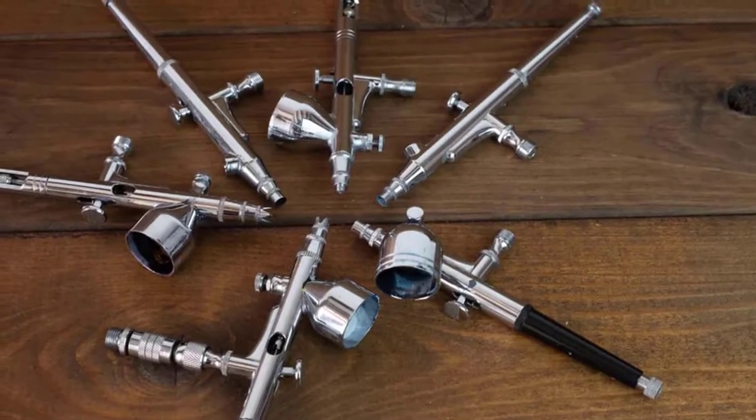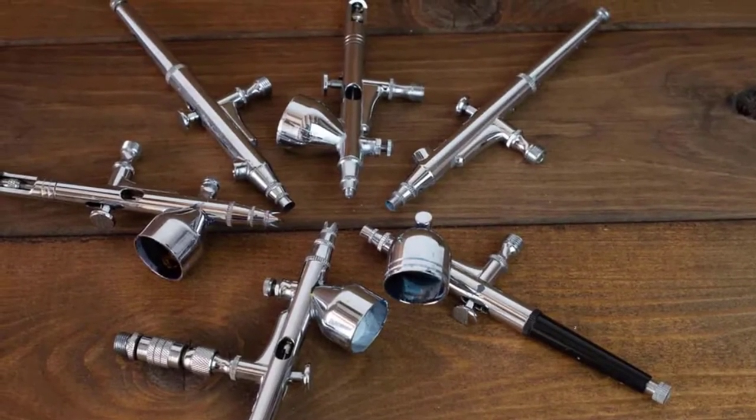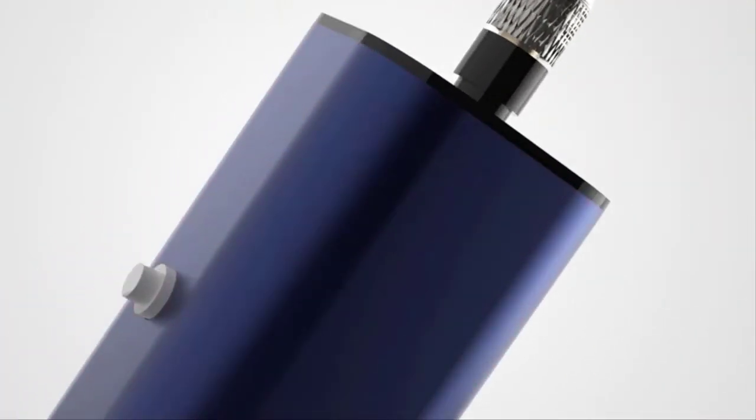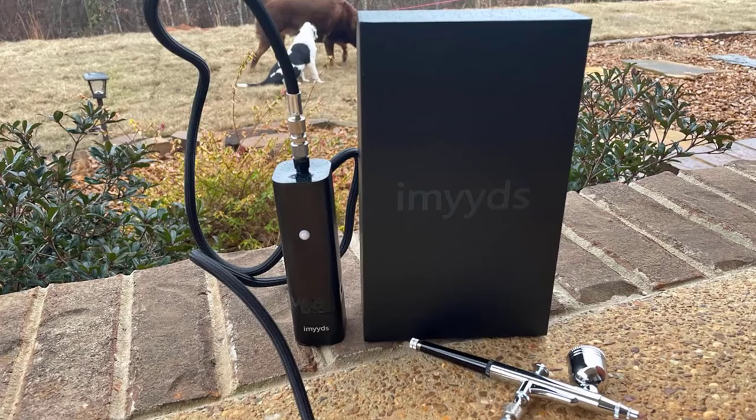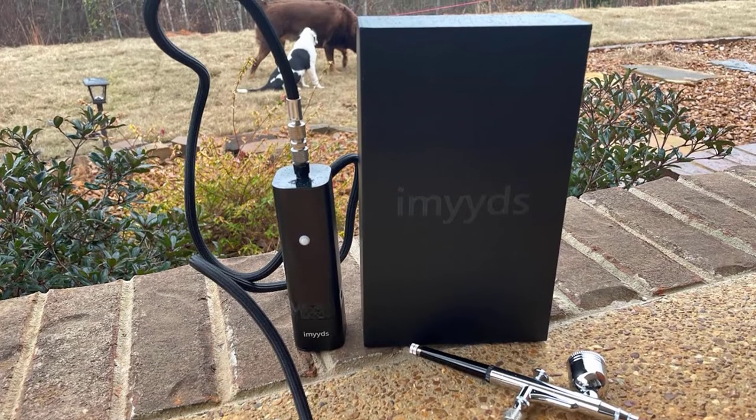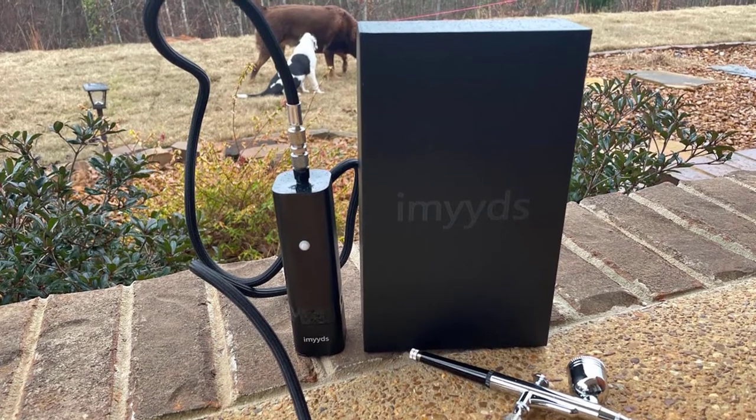The Meads airbrush comes with a double action trigger. We built an air valve into the airbrush so you can control paint and airflow separately with the trigger. When you press the trigger down, the compressor turns on automatically and airflow comes out. It stops working automatically after releasing the trigger.